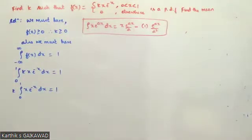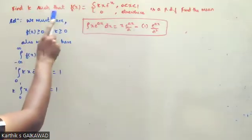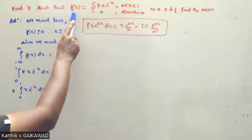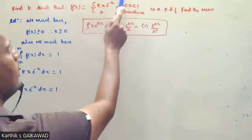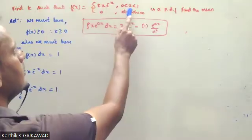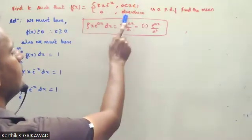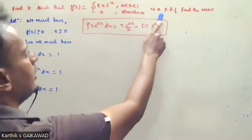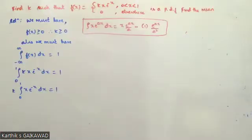Question 1. Find k such that f(x) = kx·e^(-x) when x is between 0 to 1, and f(x) = 0 elsewhere, is a PDF. Find the mean.